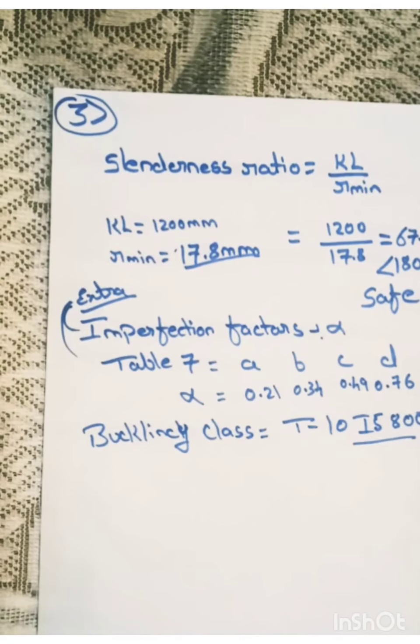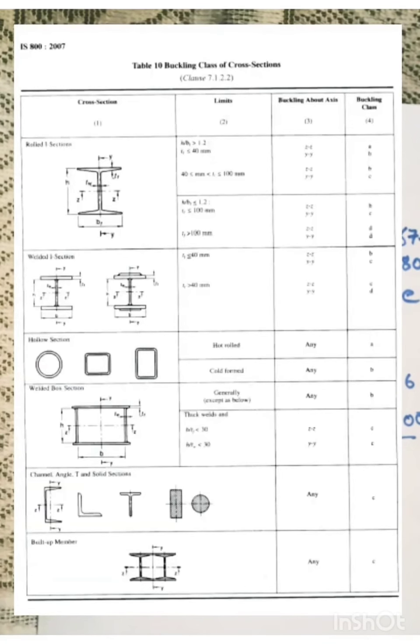So here you can see table number 10. For IS sections, if H by BF is greater than 1.2 and thickness of flange is 40 mm. Here H is overall depth and BF is width of the flange. If it is greater than 1.2, we need to refer these buckling about xx, zz or xx and yy. About zz axis the buckling class will be A and about yy axis the buckling class will be B. Similarly, if the thickness of flange is in between 40 mm to 100 mm. About xx and about yy. We can take B and C respectively.